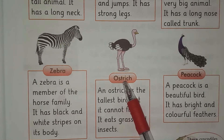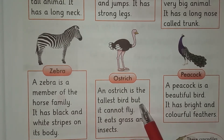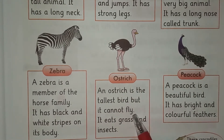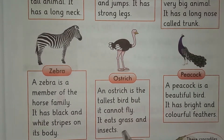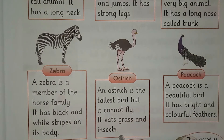Ostrich. An ostrich is the tallest bird but it cannot fly. It eats grass and insects. Ostrich sab se lamba parinda hai lekin woh ud nahi sakta. Yeh ghaas aur keere khaata hai.